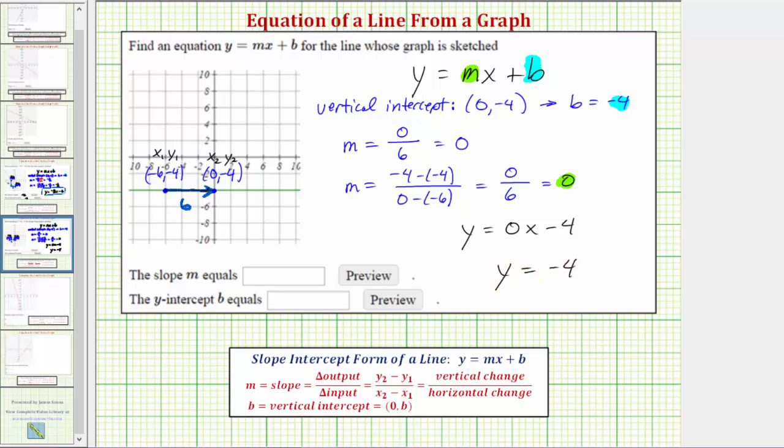It's true for any horizontal line, the equation will always be in the form y equals a constant. And this should make sense in this case, because notice how any point on this line will have a y coordinate of negative four, and the x coordinate can be any real number.